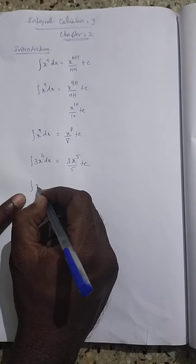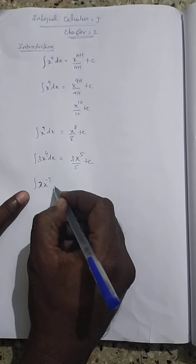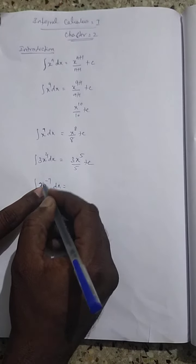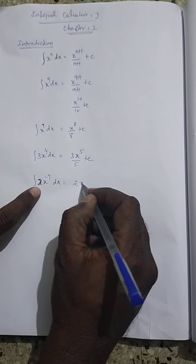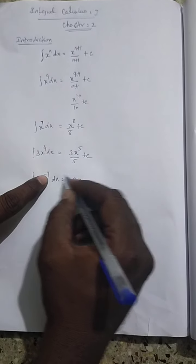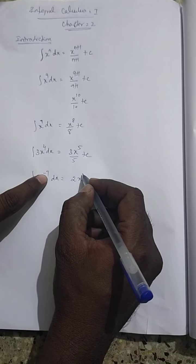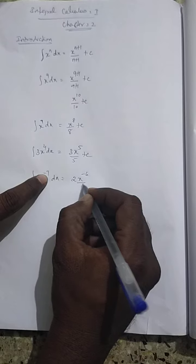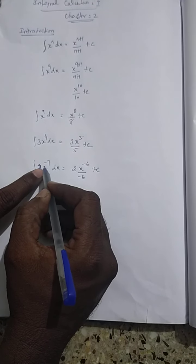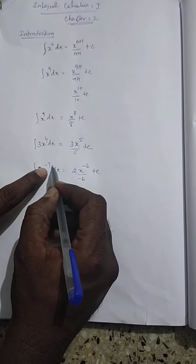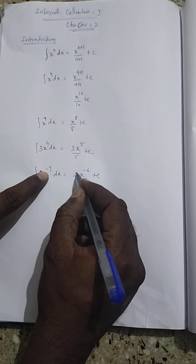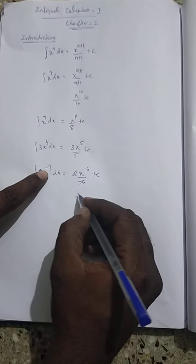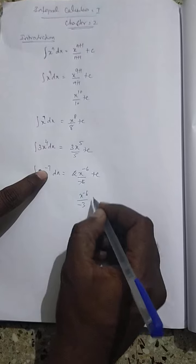Now, the integration of 2x power minus 7 dx. 2 is a constant, so keep 2 outside. Now, minus 7 plus 1 — what is minus 7 plus 1? That is minus 6. So the answer is 2 times x power minus 6 by minus 6 plus c. You can cancel, so the answer is x power minus 6 by minus 3 plus c.